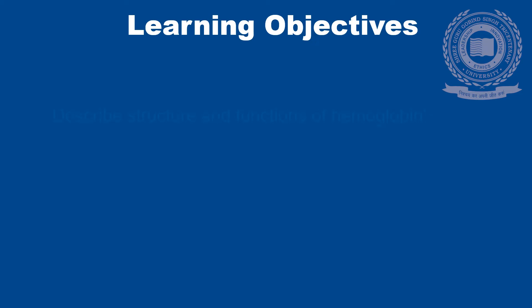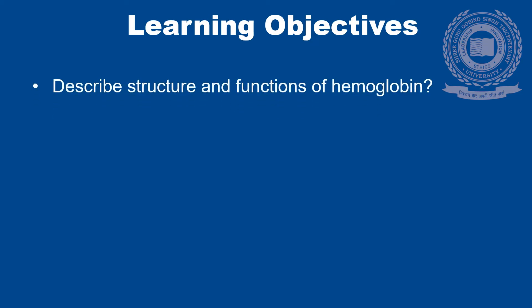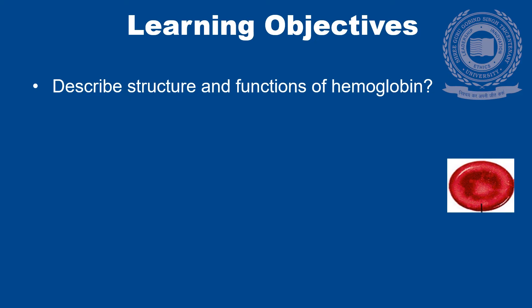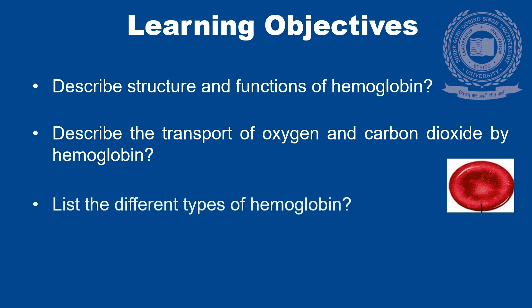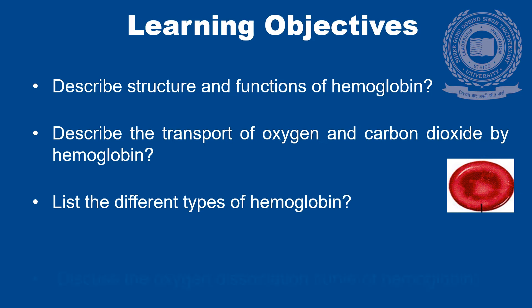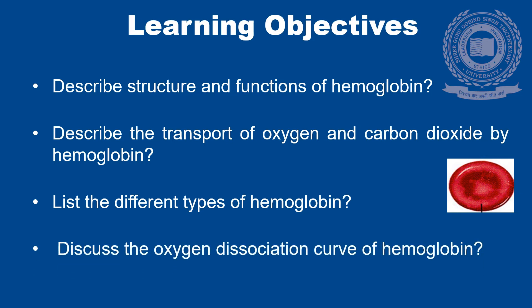Now the learning objectives: describe the structure and functions of hemoglobin; describe the transport of oxygen and carbon dioxide by hemoglobin; list the different types of hemoglobin; and discuss the oxygen dissociation curve of hemoglobin.